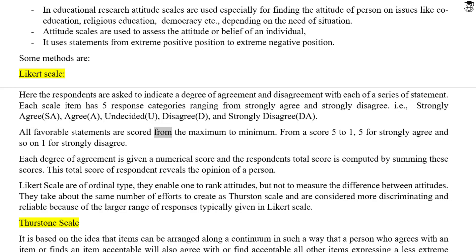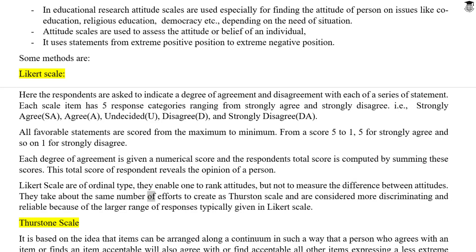All favorable statements are scored from maximum to minimum — from a score of 5 to 1, where 5 is for strongly agree and 1 is for strongly disagree. Each degree of agreement is given a numerical score, and the respondent's total score is computed by summing these scores. This total score reveals the opinion of a person. Likert scales are of the ordinal type — they enable one to rank attitudes but not to measure the difference between attitudes. They are considered more discriminating and reliable than Thurston scales because of the larger range of responses.